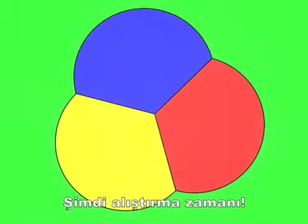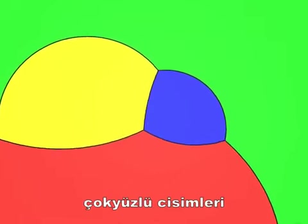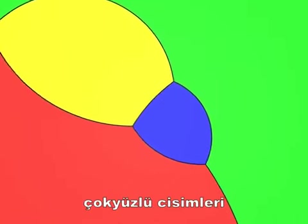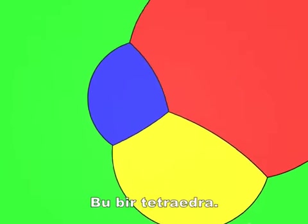Now for some exercises. Let's take ourselves down into two dimensions and try to recognize the polyhedra from their stereographic projections. It's easy, isn't it? You can see the four faces, six edges, and four vertices. It's a tetrahedron.